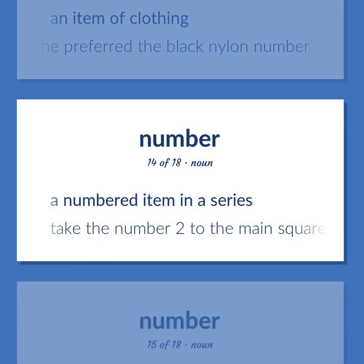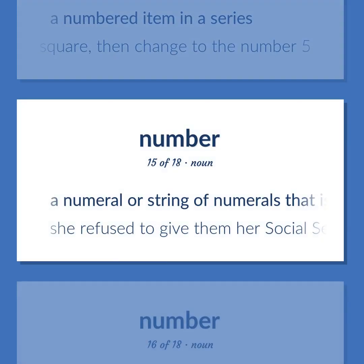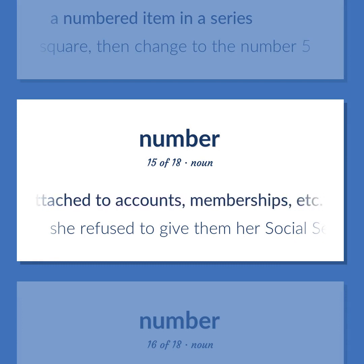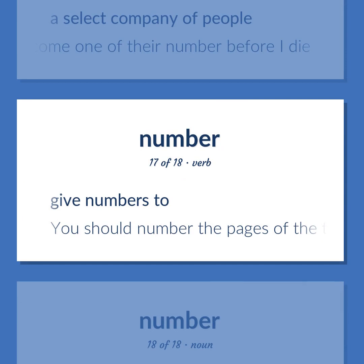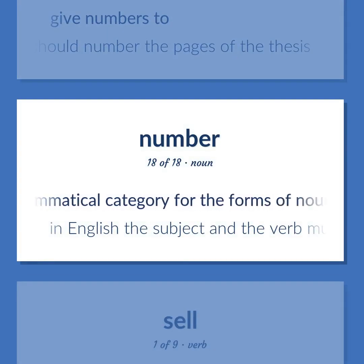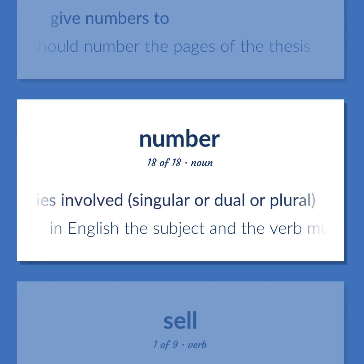A numbered item in a series — take the number 2 to the main square, then change to the number 5. A numeral or string of numerals used for identification — she refused to give them her social security number. A select company of people — I hope to become one of their number before I die. Give numbers to — you should number the pages of the thesis. The grammatical category for the forms of nouns, pronouns, and verbs used depending on the number of entities involved: singular, dual, or plural. In English, the subject and verb must agree in number.